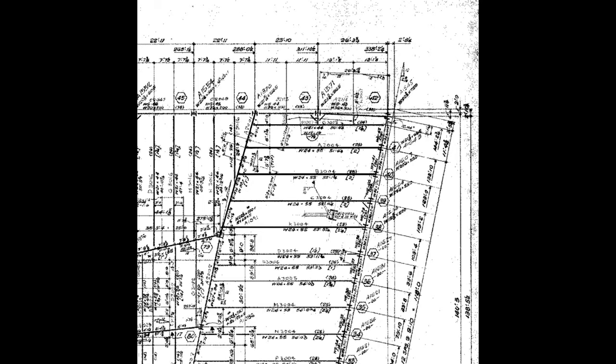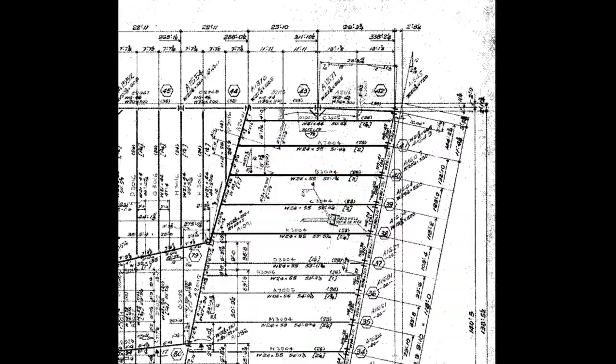This collapse hypothesis for World Trade Centre 7 involves floor beams at the north-east corner of the building pushing a girder which spanned columns 79 and 44 off its seat and initiating the collapse of the building.